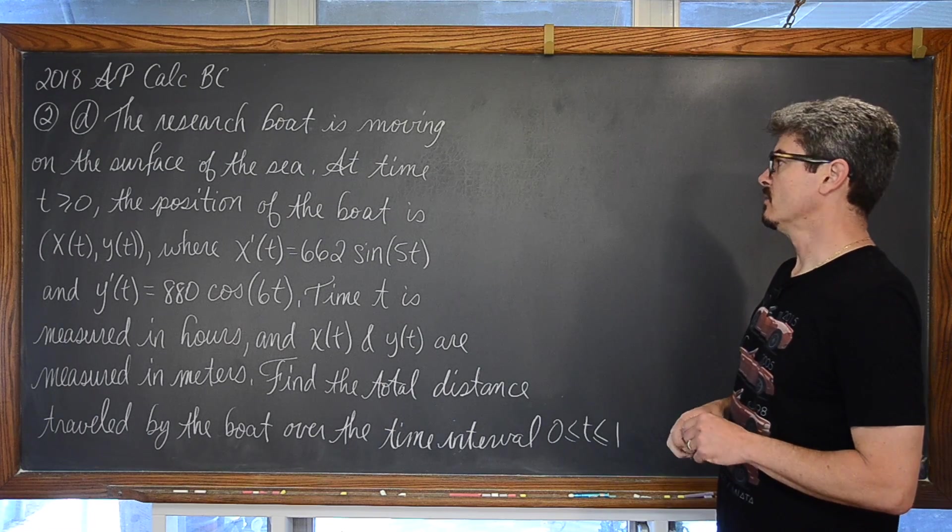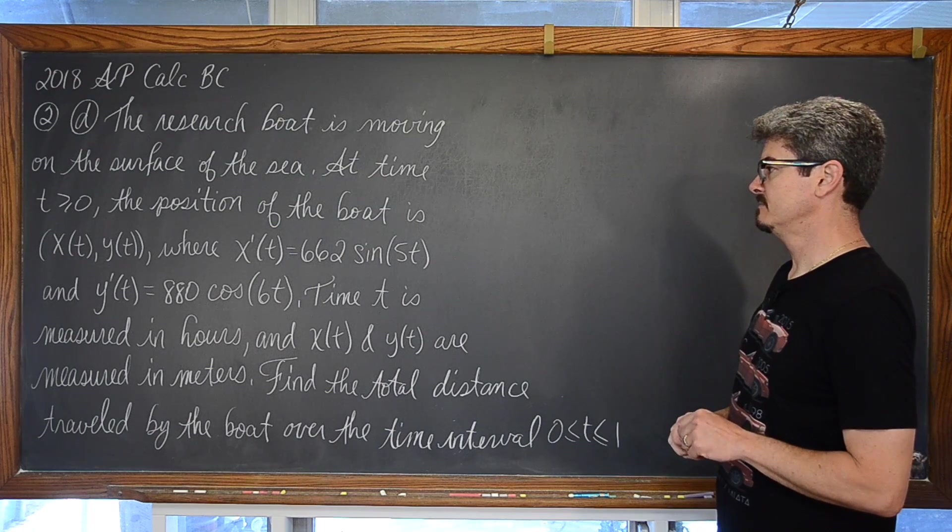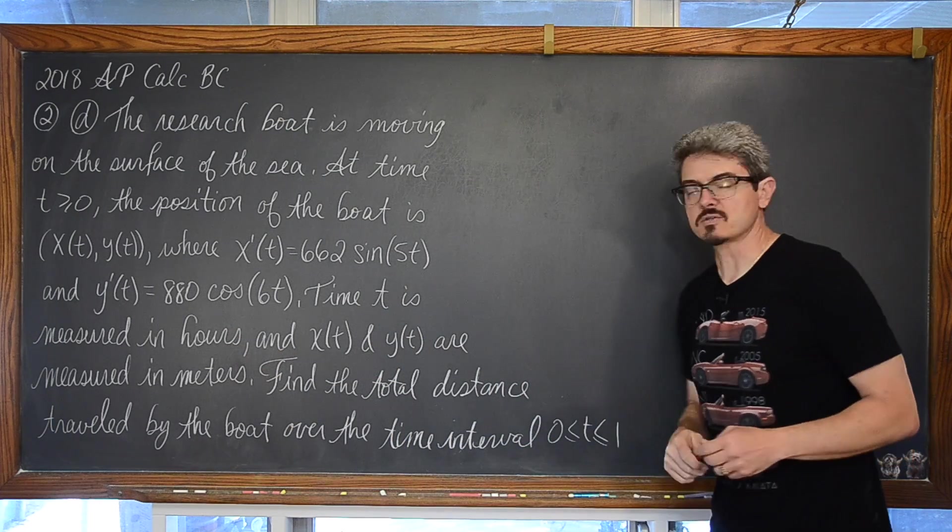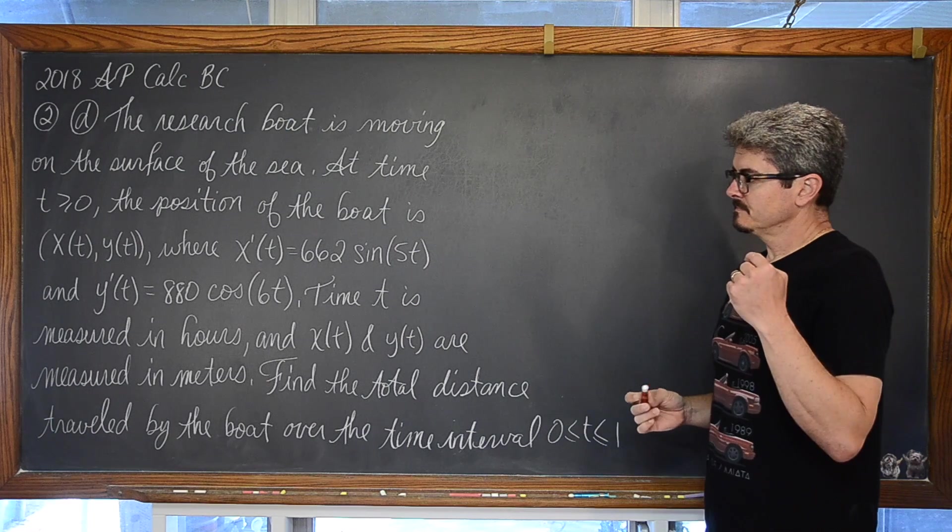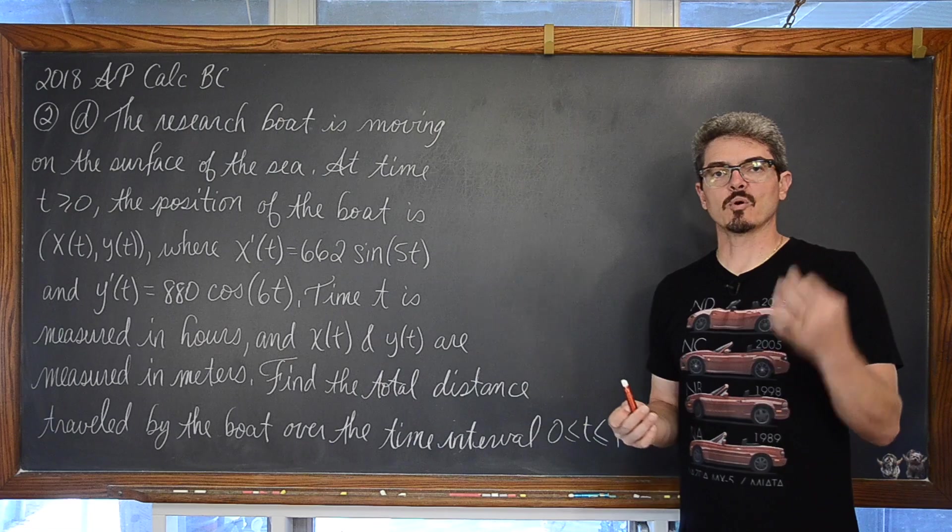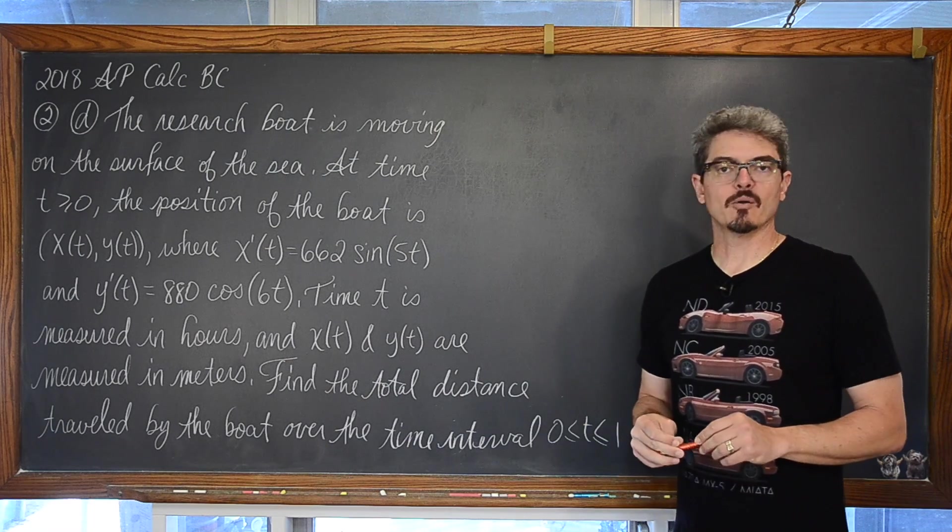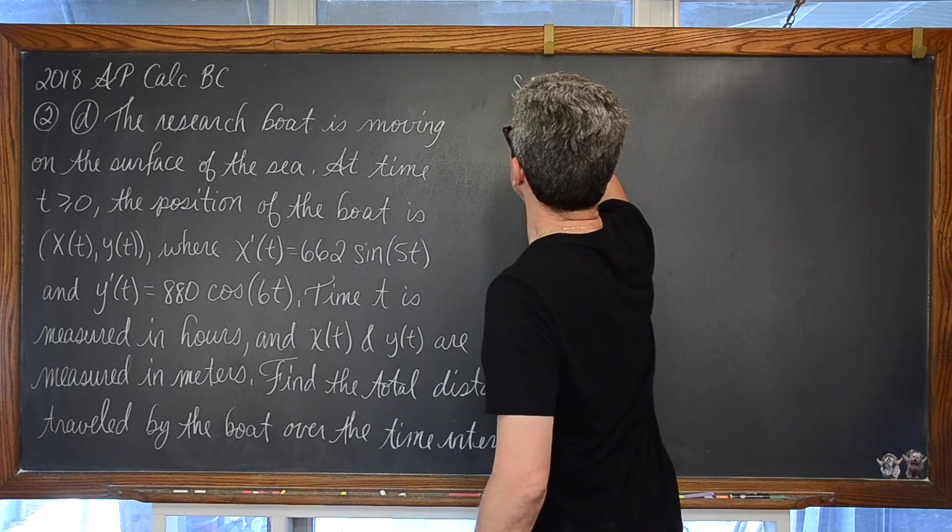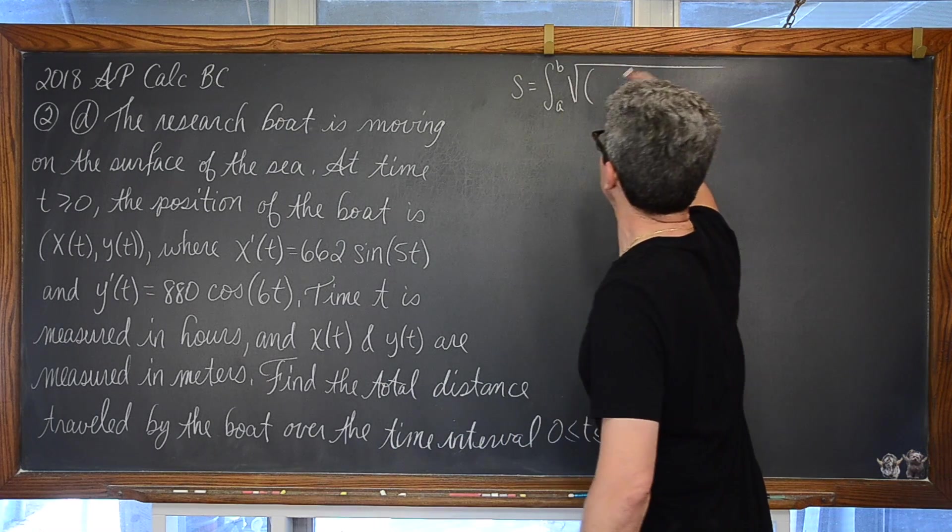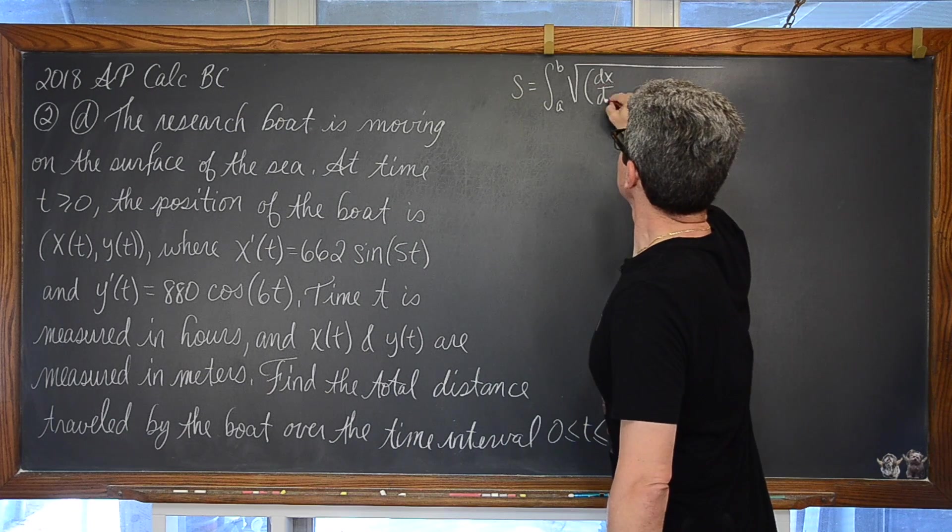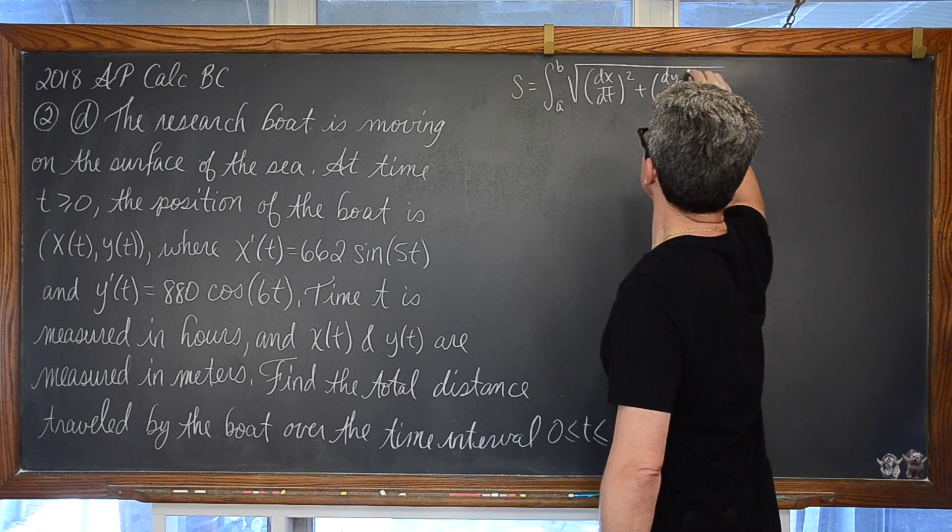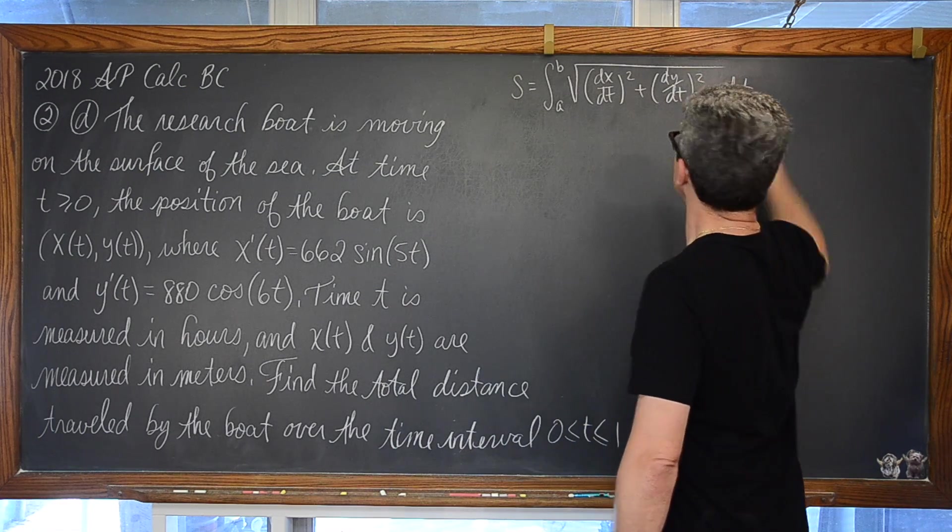where t is on this closed interval from 0 to 1. So, basically, we are going to be looking at how much the boat moved, say, basically in the first hour that they started measurements. All you have to do to answer this question correctly is remember the formula for arc length of a parametric curve. And that arc length is equal to the definite integral from a to b of the square root of the derivative of x with respect to t squared plus the derivative of y with respect to t squared dt.